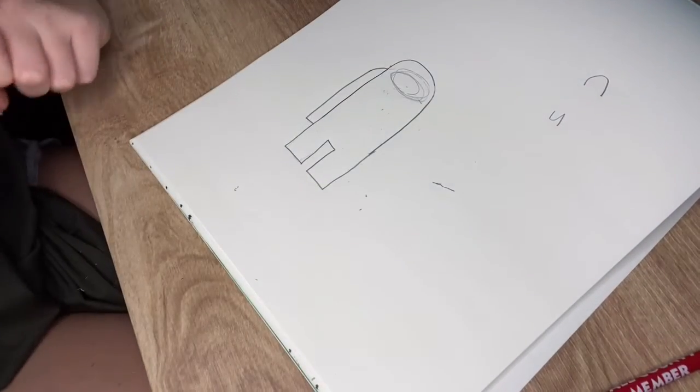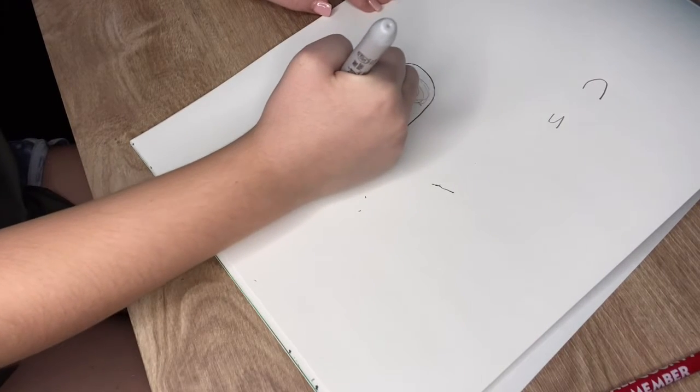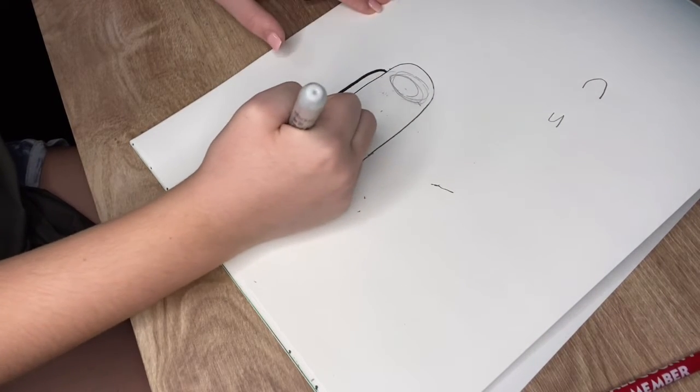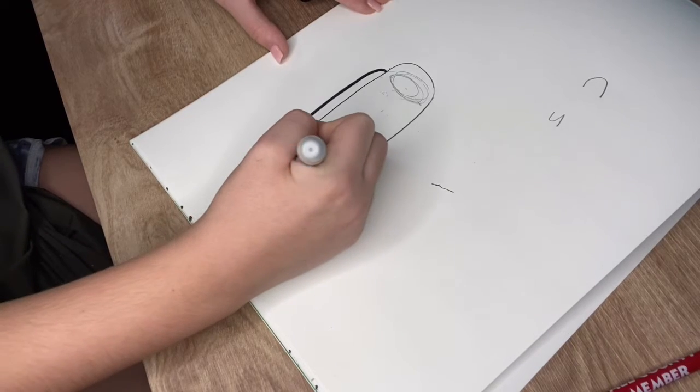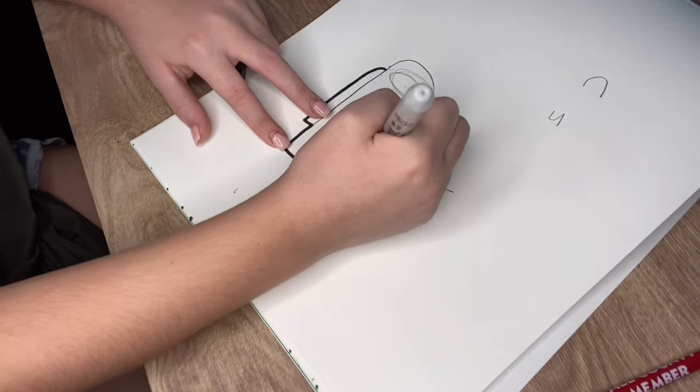You can do this a lot messier, I usually do but I'm trying to make it clear for you guys. Now you're just going to outline this in Sharpie which usually makes it look a lot better, or you can leave it how it is right now and just be done with it and write something at the top like Among Us or something like that.